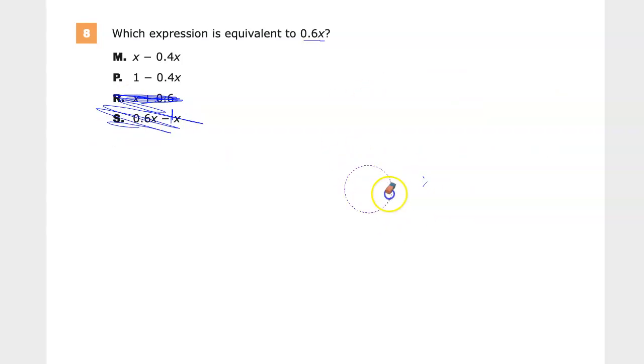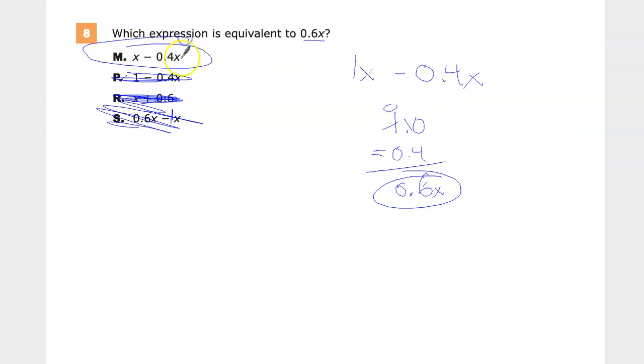So for P, 1 minus 0.4x, again those are not like terms. So I can't actually subtract that. That doesn't work. But this one I can because I have 1x minus 0.4x. And if I do 1.0 minus 0.4, 10 minus 4 is 6. And I end up with 0.6 and that would be x. So my answer to number 8 is M.